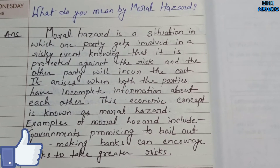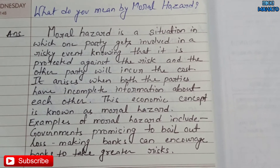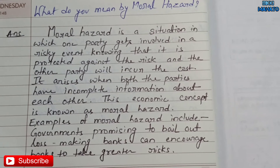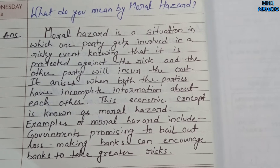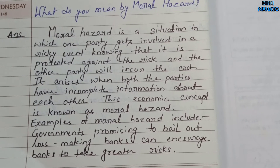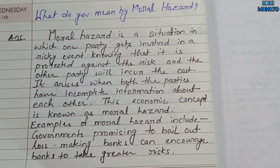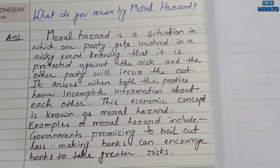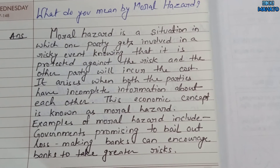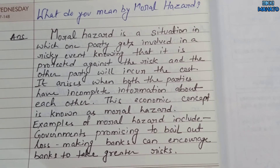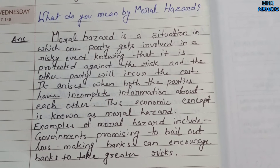Today's topic is moral hazard. Moral hazard is a situation in which one party gets involved in a risky event knowing that it is protected against the risk, and the other party will incur the cost. It arises when both parties have incomplete information about each other.